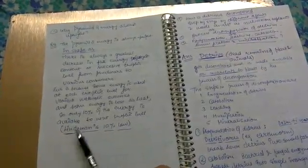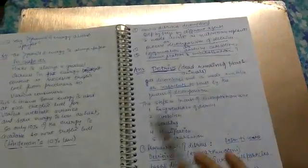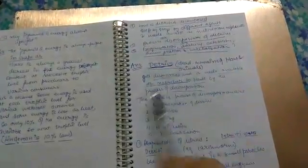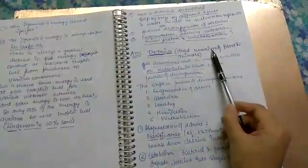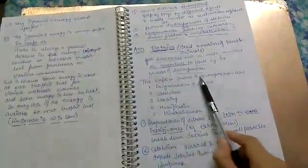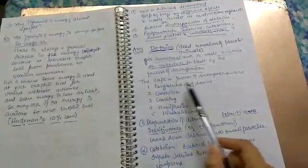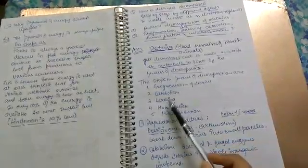Only 10% of energy is available for the next trophic level according to Lindeman's 10% law. Next is, how is detritus decomposed? Step by step. Detritus are dead remains of plants and animals. The steps in the process of decomposition will be fragmentation, catabolism, leaching, humification and mineralization.